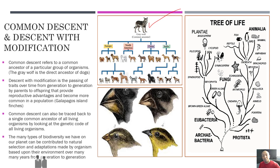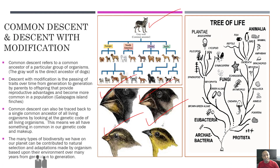One of the most famous examples of descent with modification is the Galapagos Island Finches. Each finch has a different shape and size beak because each came from a different island environment with different types of food available. The size and shape of the finch beak determines their success rate eating food in that island environment. Over time and several generations, beneficial traits were passed from parents to offspring to give the next generation a better chance of surviving and reproducing. Common descent can also be traced back to a single common ancestor of all living organisms by looking at the genetic code, meaning all living things share something in common in their genetic makeup.